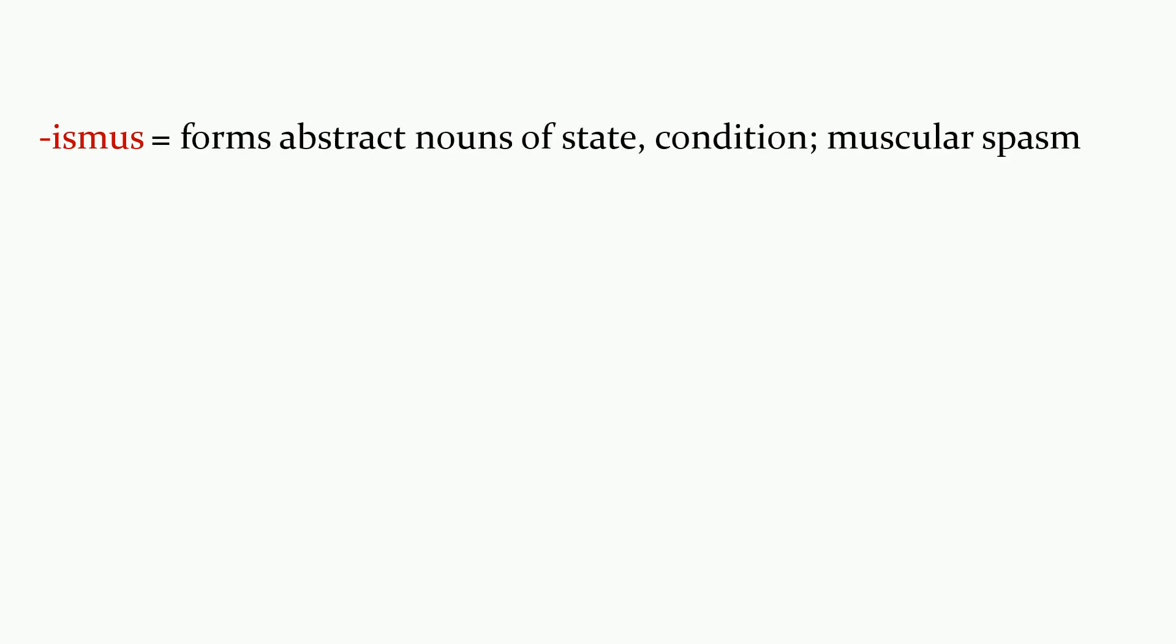Next we have -ismos. This forms abstract nouns of state or condition or muscular spasm. That's an interesting one. There's spasm, there's another word with that z in the place of an s. We get cherysmus, laryngismus, strabismus which some people may have heard of, and this one I'm definitely not going to tell you what this one means: pachycolpismus. If you are the kind of student that just loves to get to the bottom of a mystery, this would be a good time to pause and go look that one up if you can find it. But I definitely can't show you a picture of that and I'm not going to tell you what it is.